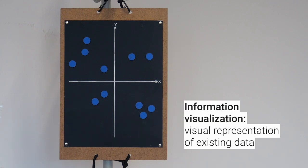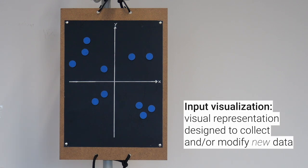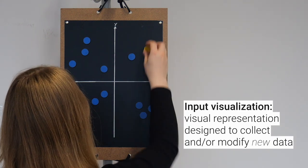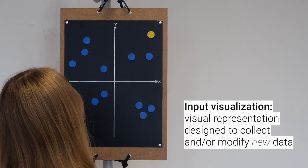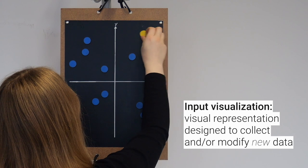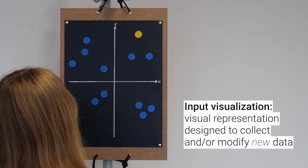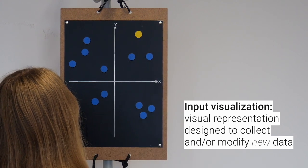Information visualization commonly describes the visual representation of existing data. We examine input visualizations — visual representations that are designed to collect or modify new data rather than encode pre-existing data sets.